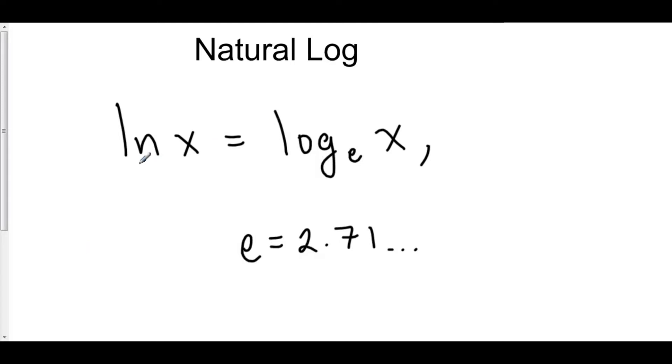Natural log is log base e, where e is approximately 2.71, so on and so forth. Like pi, it is one of these naturally occurring irrational numbers that appears everywhere you have some sort of exponential growth or decay. e is really a fascinating number, but natural log is just log base e of x. That's all it is.